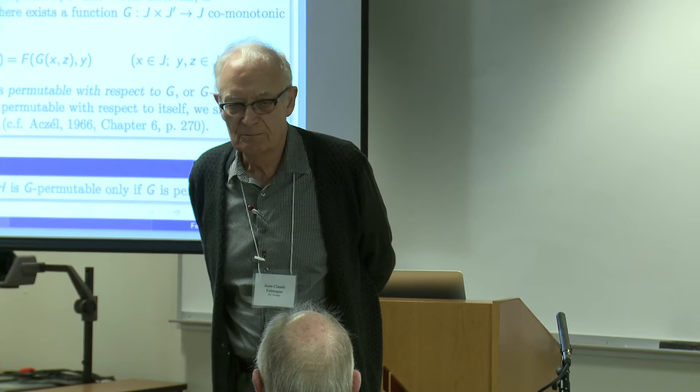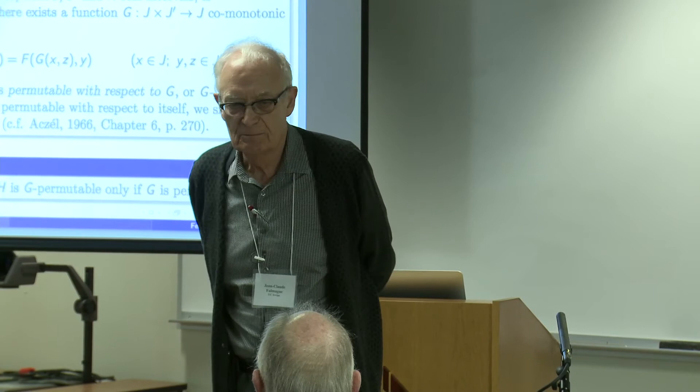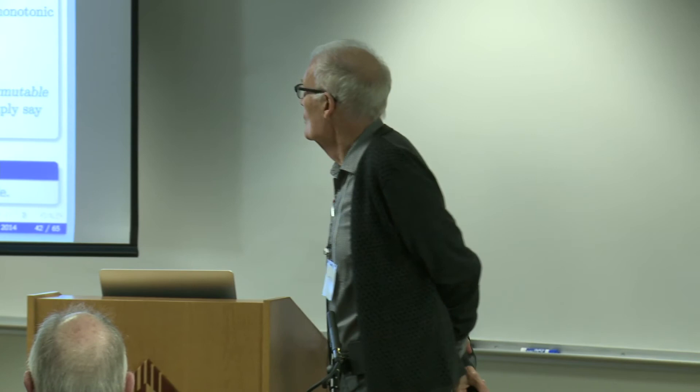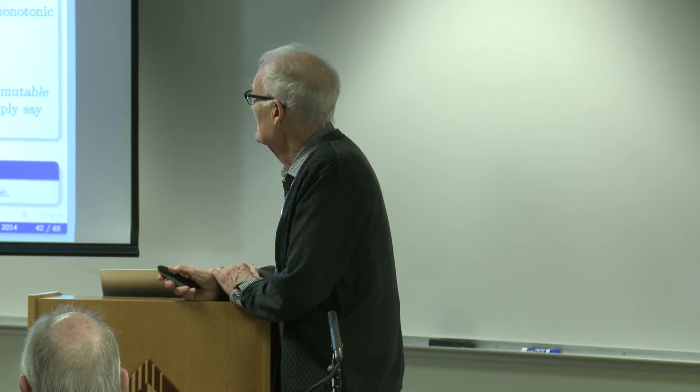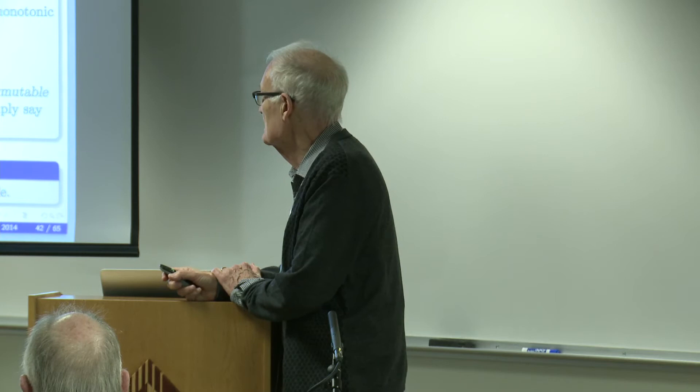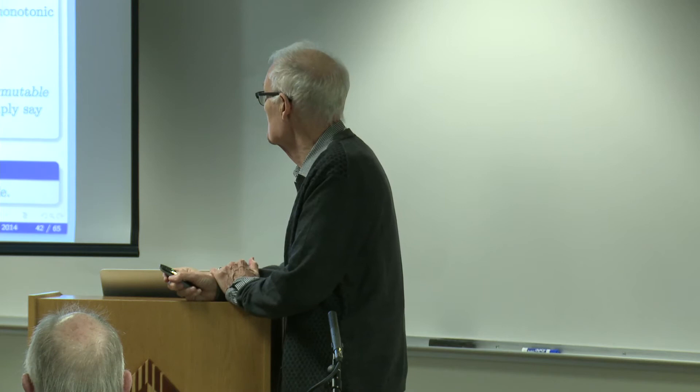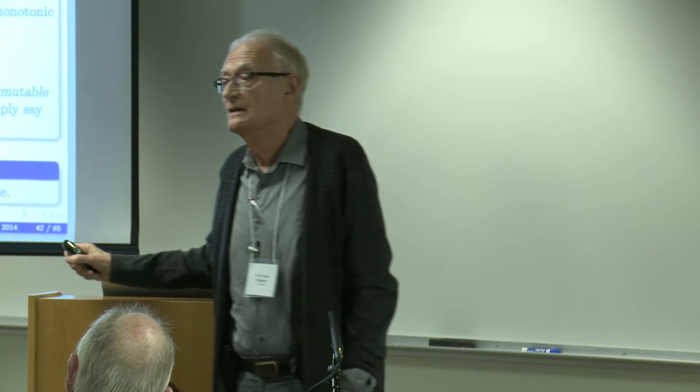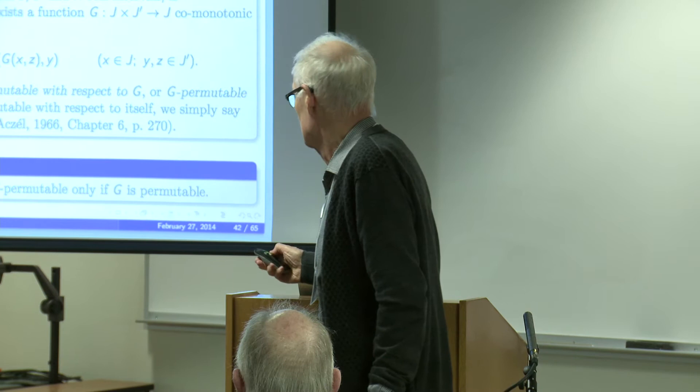A code f is quasi-permutable if there exists a function g such that F(g(x,y),z) = F(g(x,z),y). We then say that f is permutable with respect to g, or g-permutable. When f is permutable with respect to itself, we simply say that f is permutable — this comes straight from Axel's book.